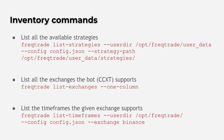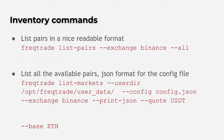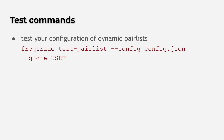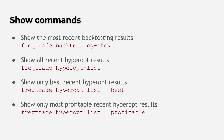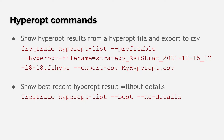I am also going to show you commands that can list your current strategies that are already available in your strategies directory. I can show you the command that lists all the current supported exchanges for the bot, and also the command that lists all the supported timeframes from your favorite exchange, and all the current pairs that your exchange provides. There is also a command that helps you test the pair list configured in your config.json file.